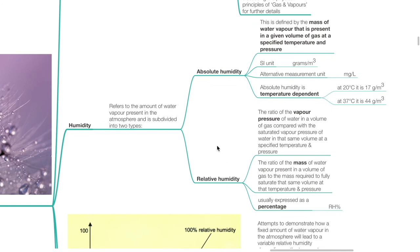Humidity refers to the amount of water vapor present in the atmosphere and is subdivided into two types: absolute humidity and relative humidity. Absolute humidity is defined by the mass of water vapor present in a given volume of gas at the specified temperature and pressure. The SI unit is grams per meter cubed; an alternative measurement unit is mg per liter. Absolute humidity is temperature dependent: at 20°C it is 17 g/m³, and at 37°C it is 44 g/m³.